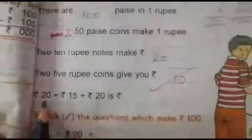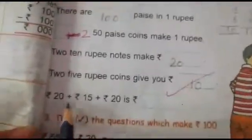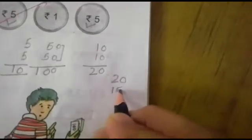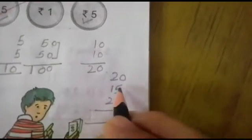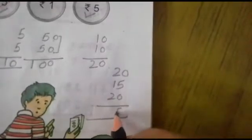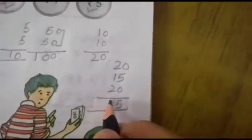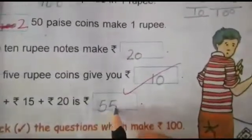Now we have to add 20 rupees plus 15 rupees plus 20 rupees. We will do it like this: 20 rupees, 15 rupees and 20 rupees. The answer is 55 rupees.